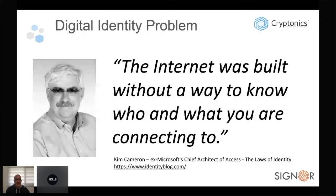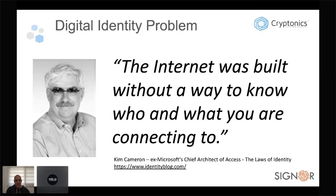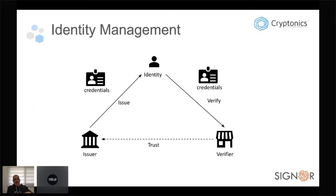Digital identity is obviously a problem on the internet, because the internet is very old. As Kim Cameron once said, the internet was built without a way to know who and what you are connecting to. When the internet was first invented, nobody thought about use cases like identity and authentication — these were added as an afterthought, and that led us to a messy situation.